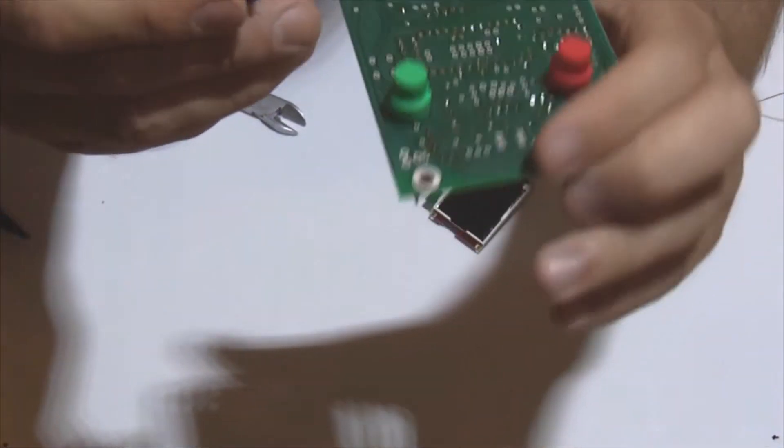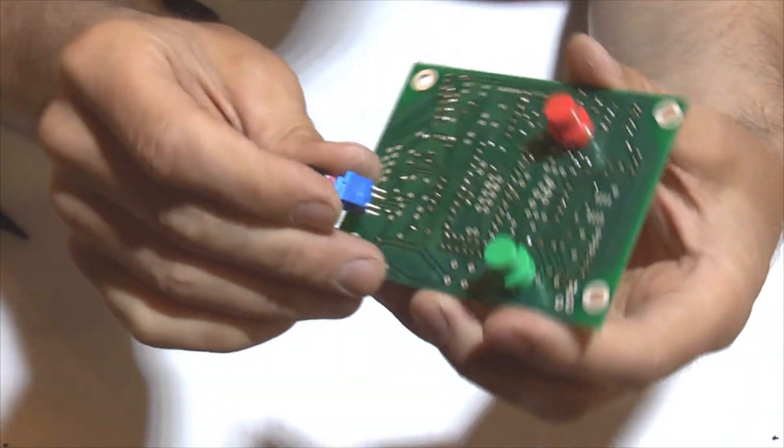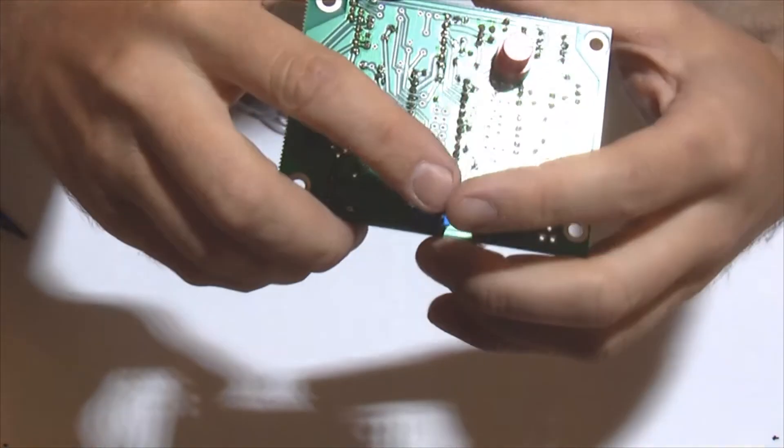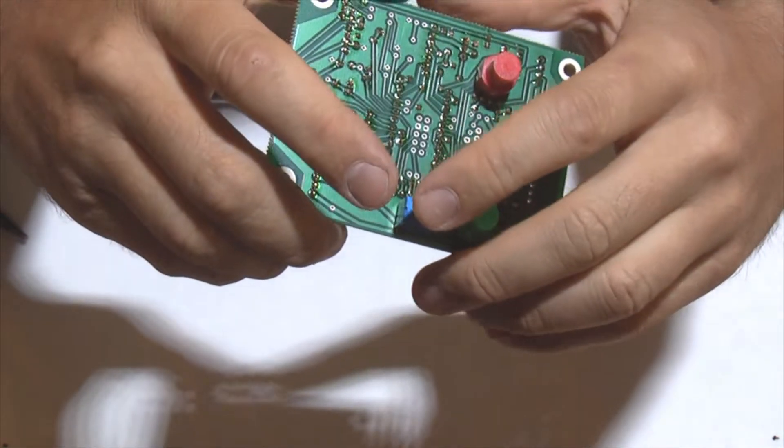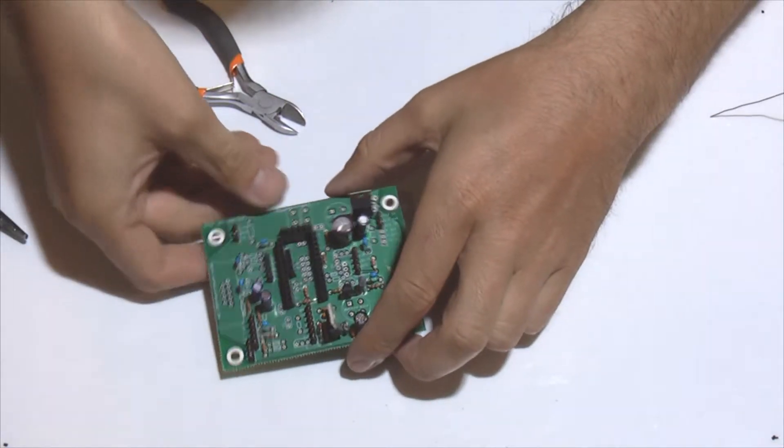Last button is this SPST button that will be used to switch on and off the display during the programming. So it goes in like this. Okay, so turn over and solder.